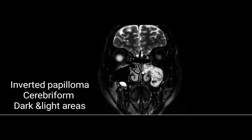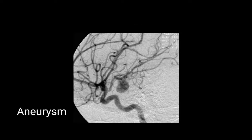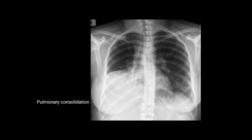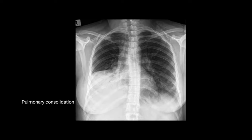This is an image of inverted papilloma giving a cerebriform appearance, with dark and light areas. It is coming from the turbinate region. The next image is of an aneurysm — an angiographic image showing blood vessels with a dilatation in the blood vessel. Following that is an image of pulmonary consolidation, seen in cases like pneumonia.